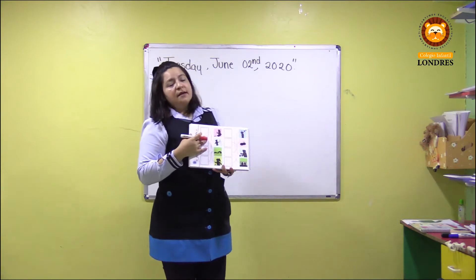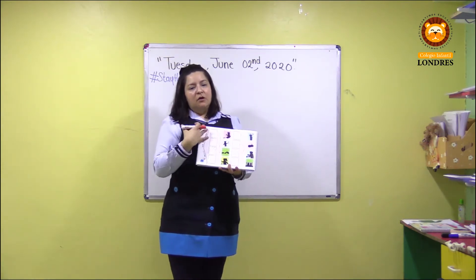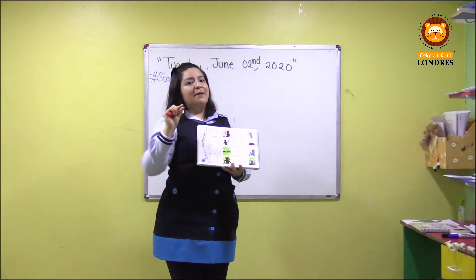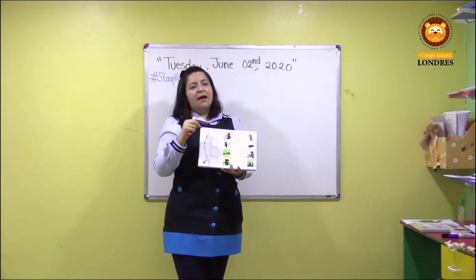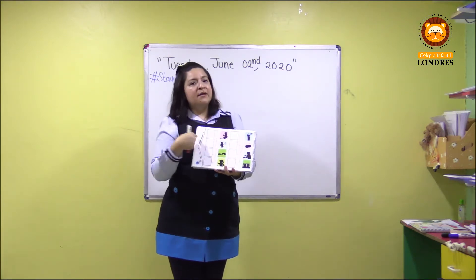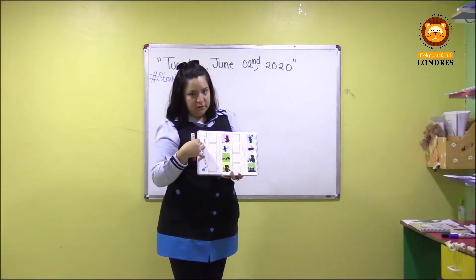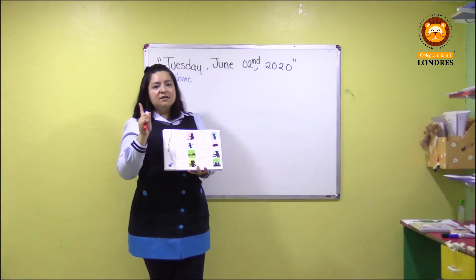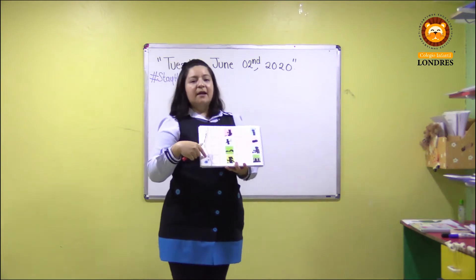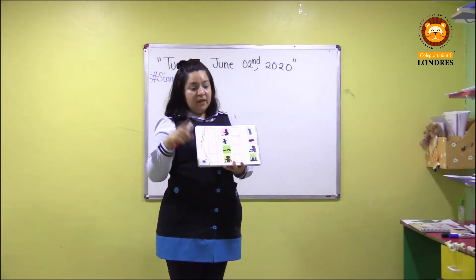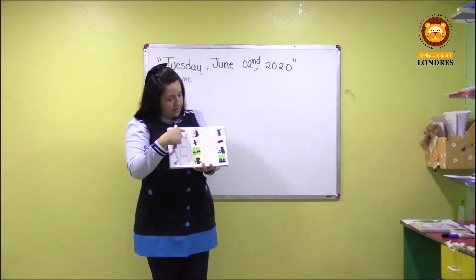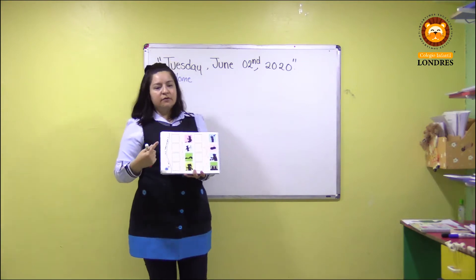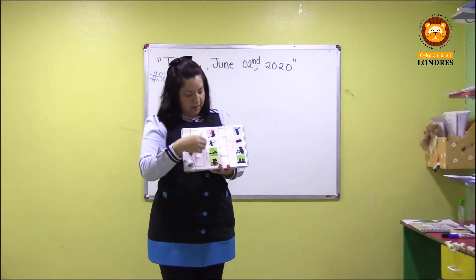Recuerden que ya tienen los otros dos libros que son parte también de lo que es recortable. El libro azul delgadito donde aparece el chico a color, ese es para obtener toda la parte de stickers, ¿vale? Entonces van a identificar los dos stickers que corresponden a la unidad número nueve. De acuerdo a la acción que estamos manejando en cada una de estas sombras, ayúdenme a contar: how many persons we have?